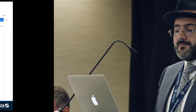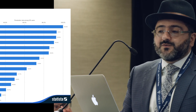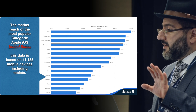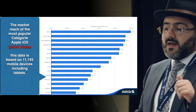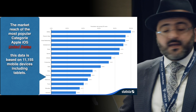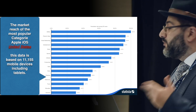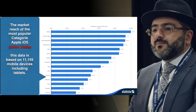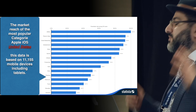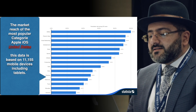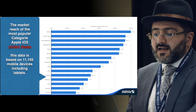Now, when it comes to the US market — the market reach of the most popular app category in the US, based on 11,155 mobile devices including tablets — utilities, photo and video, and social networking is at 92%. Most people had 92% of social networking apps in their phones. Books happen to be at 62% in the US, which probably makes sense because people read more in the US. The global market may be lower depending on literacy rates worldwide.